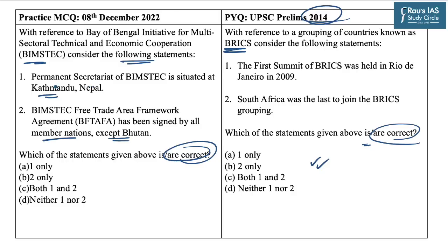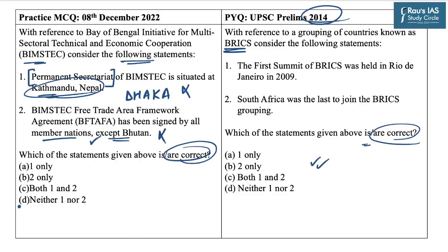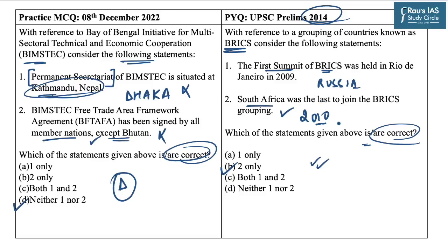Whenever you come across terms like 'permanent secretariat of any intergovernmental organization,' be very cautious. The location in Statement 1 is mentioned incorrectly — the permanent secretariat of BIMSTEC is in Dhaka, not Kathmandu. Statement 2 is also incorrect, as the Free Trade Agreement has been signed by all nations including Bhutan. So the answer is D — neither 1 nor 2. For the BRICS question, the answer is B — 2 only — because the first BRICS summit was held in Russia, not Brazil, and South Africa joined BRICS in 2010.